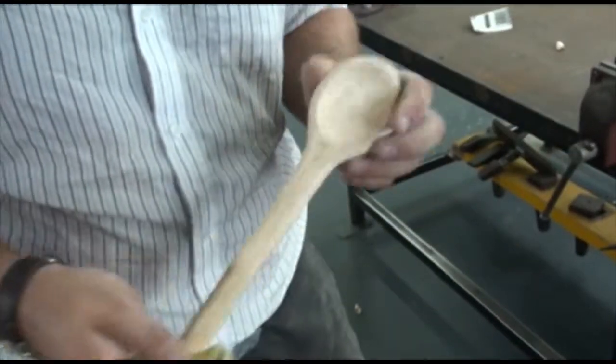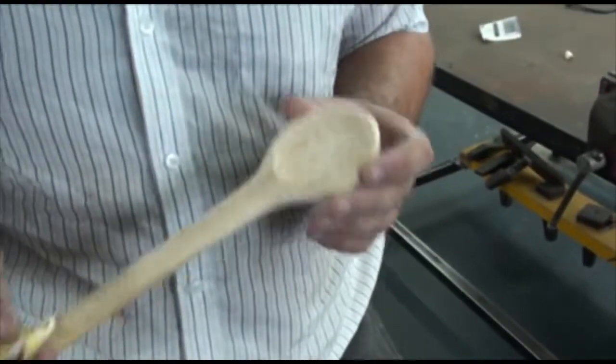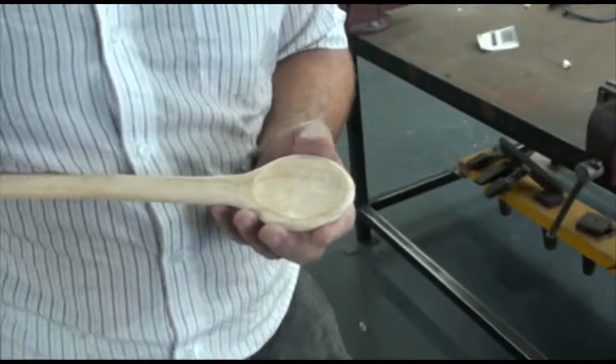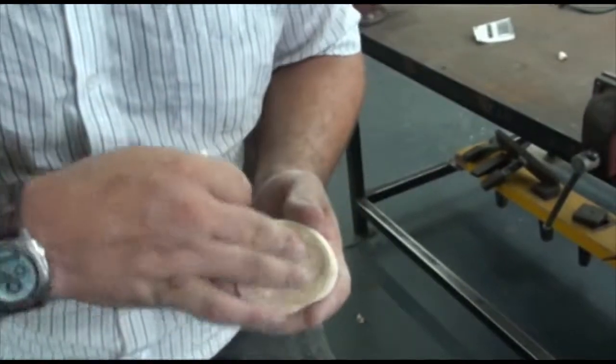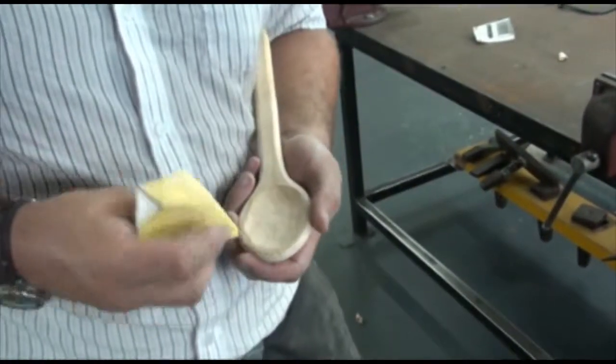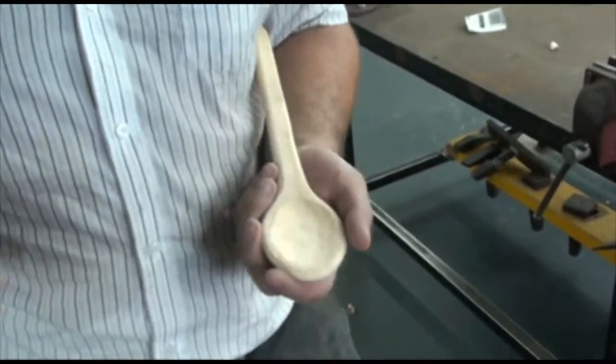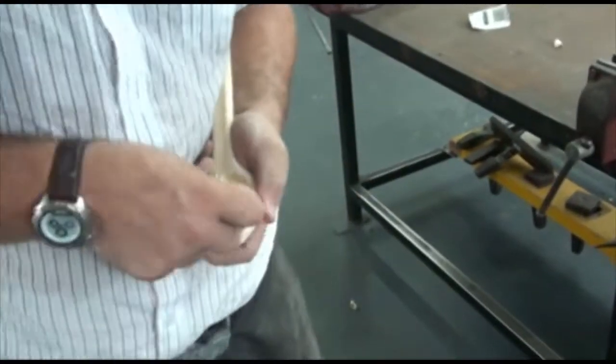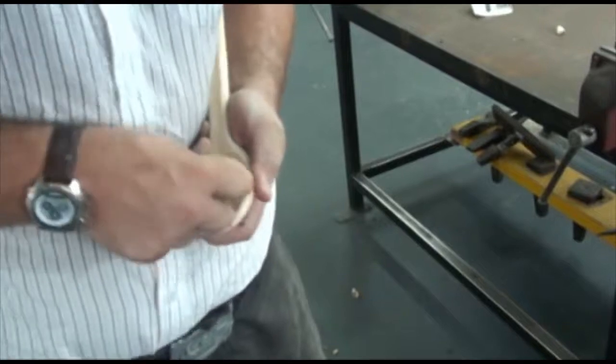Some students have taken, I've seen them spend three lessons doing just this part of the spoon. If you've done a good job on this, you might be able to do it in, I've seen one smoothed out in as little as five minutes. It depends how good a job you've done with that chisel.